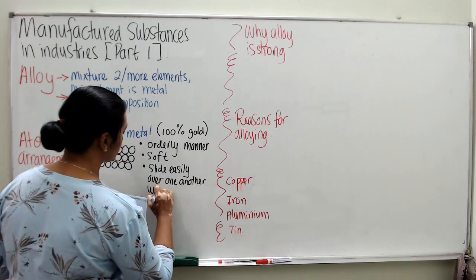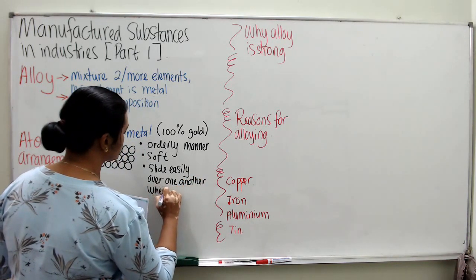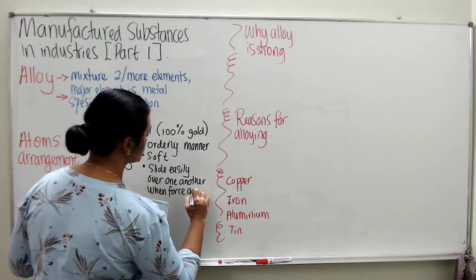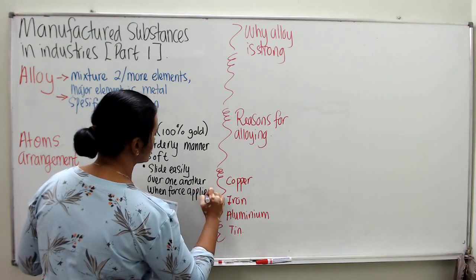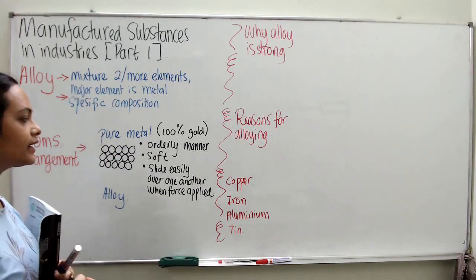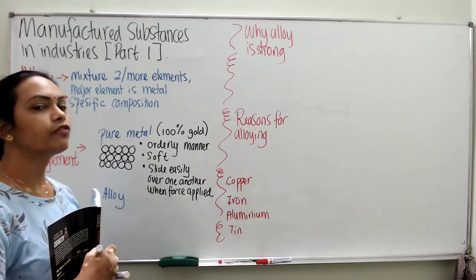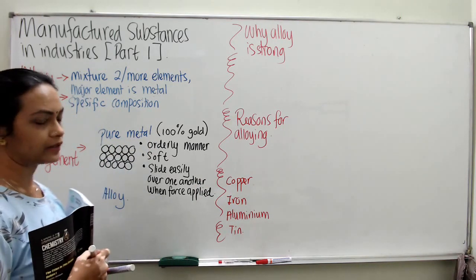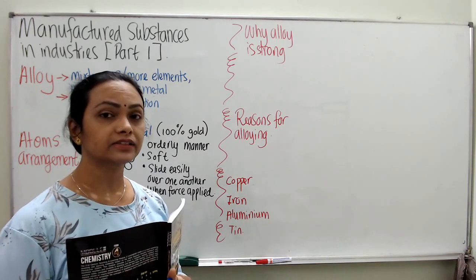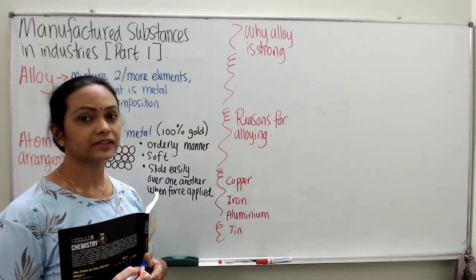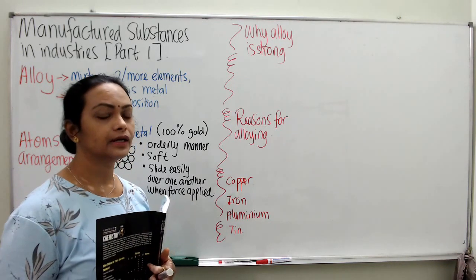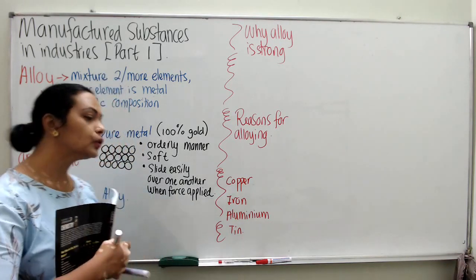When force is applied, the atoms can slide over one another easily. So there is a reason why pure metal atoms are said to be malleable — malleable in the sense that you can shape them easily.